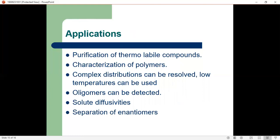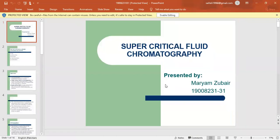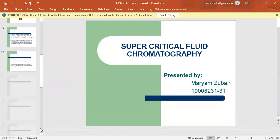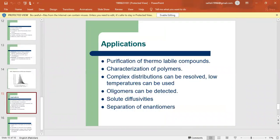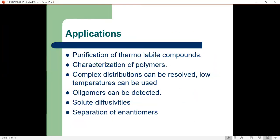Applications include: it is commonly used for the separation of chiral molecules, commonly used for chiral separations and purification in the pharmaceutical industry, purification of thermolabile compounds, characterization of polymers, complex distributions can be resolved, low temperatures can be used, and oligomers can be detected.